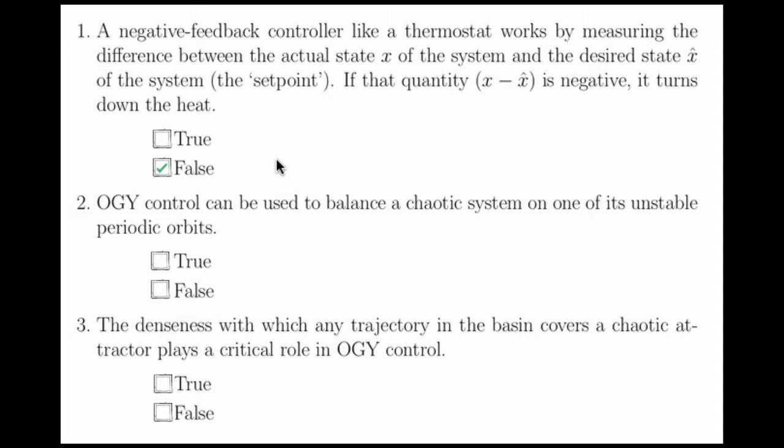Then x-hat would be 21. Say the room was actually 20 degrees Celsius. So the room was colder than we wanted it to be. Then 20 minus 21 is a negative quantity, and this would turn down the heat.